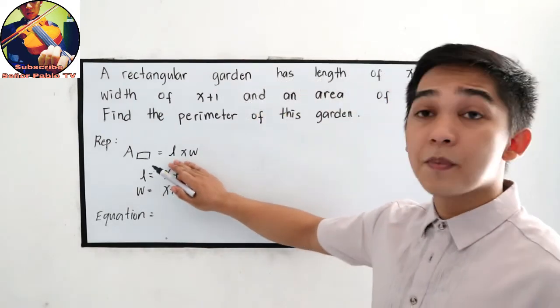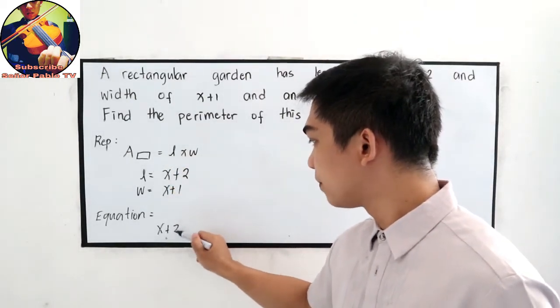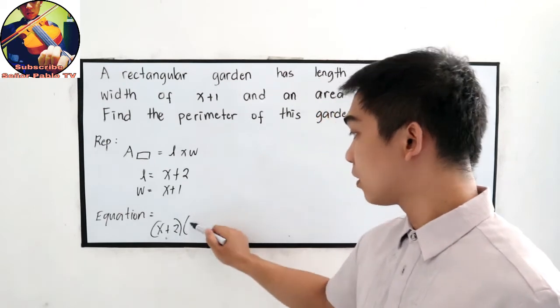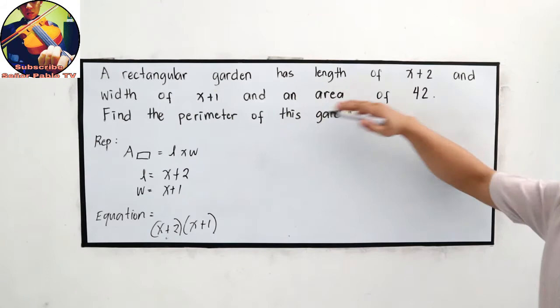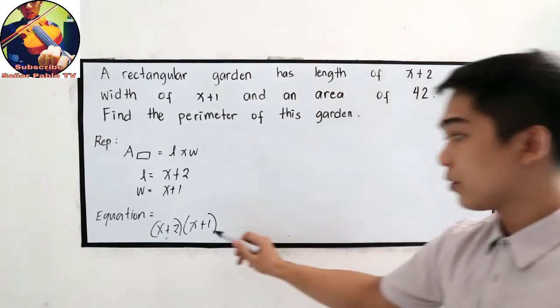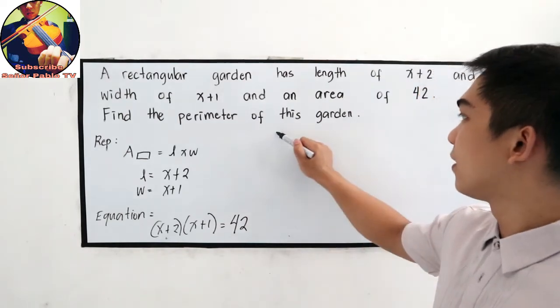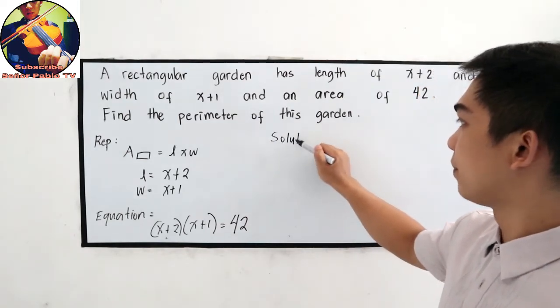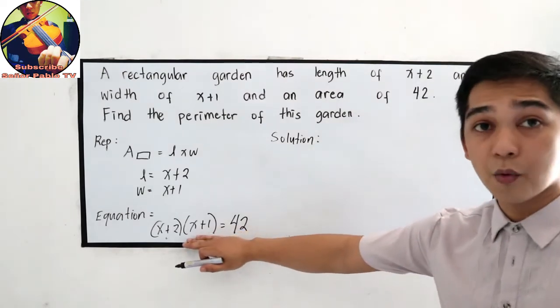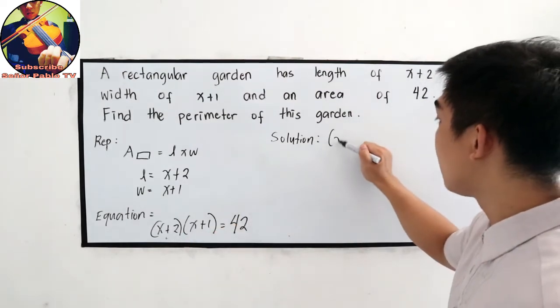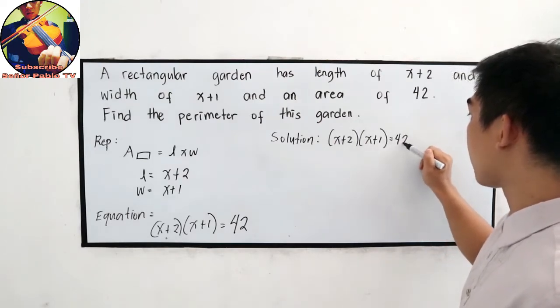Let us substitute length times the width. So length is x plus 2 times the width x plus 1 given the area of 42 is equal to 42. Let us proceed in our solution.